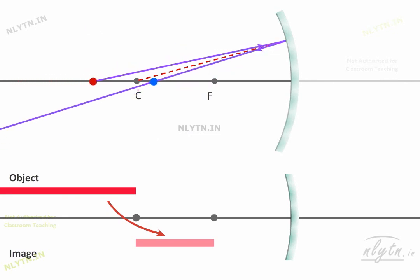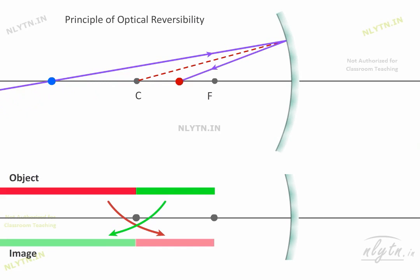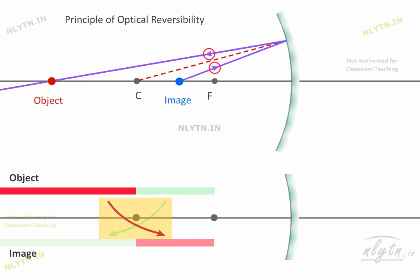And from the principle of optical reversibility, we can say that for a particular position of object and image, we can just reverse the direction of rays to swap the position of object and image. So this symmetry is expected. And this relationship of position of object and image in this region is the exact reverse of the position of object and image in that region.